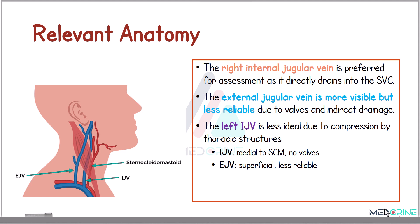The left internal jugular vein is less preferred due to its anatomical compression by the thoracic structures. Notably, the internal jugular vein lies medial to the sternocleidomastoid muscle, whereas the external jugular vein is superficial.